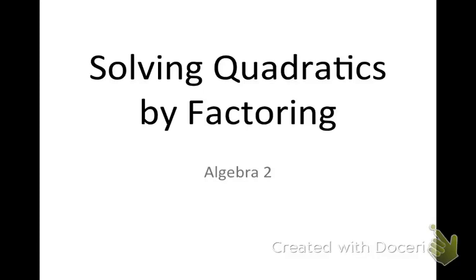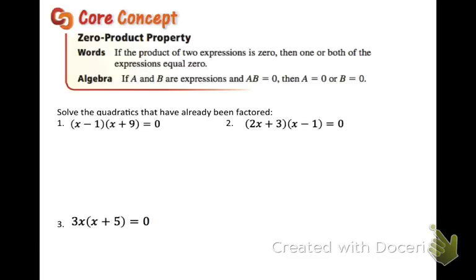Solving quadratics by factoring. The first thing we need to talk about is something called the zero product property. What this means is if we are multiplying two things together and they equal zero — like a times b equals zero — then either a or b has to be zero. One of them has to equal zero. You cannot multiply two non-zero numbers together and get zero.